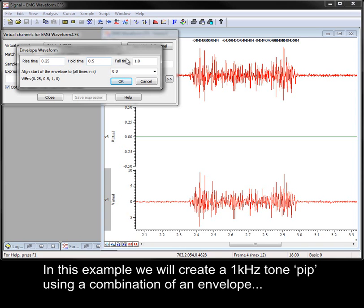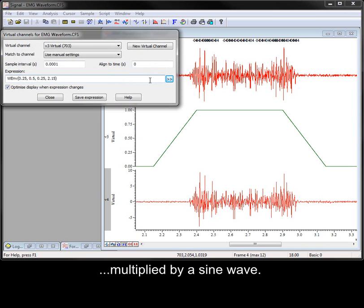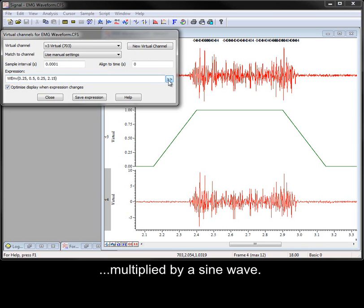In this example we will create a 1 kilohertz tone pip using a combination of an envelope multiplied by a sine wave.